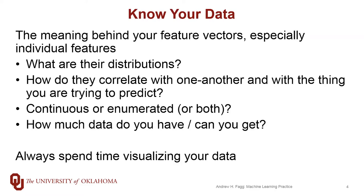As far as knowing your data goes, things like what do your feature vectors mean, and what do the individual features mean? What do the distributions look like? Do the features correlate with one another, or do they correlate with the thing you're trying to predict? Are the features continuous, or are they enumerated, or do you have some mixture of both? And then understanding how much data you have now and how much data you can get your hands on within your project's time frame.